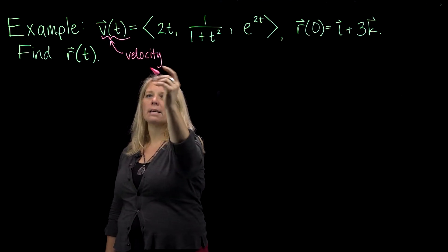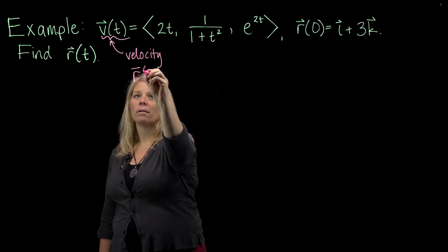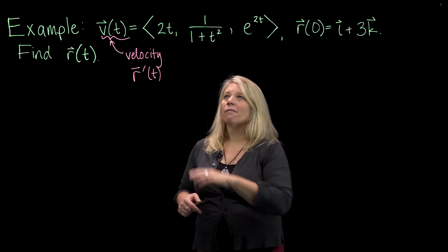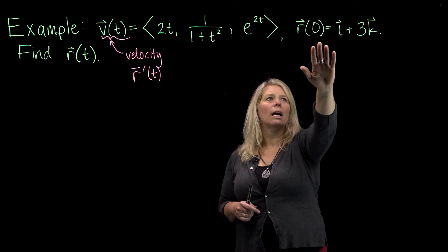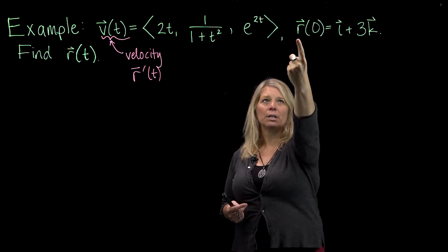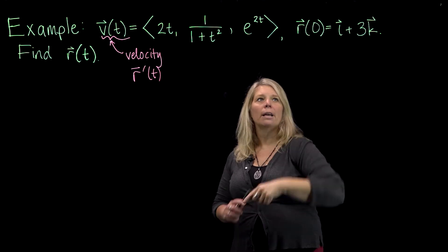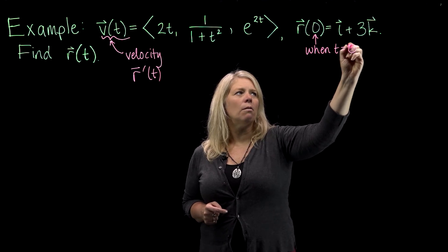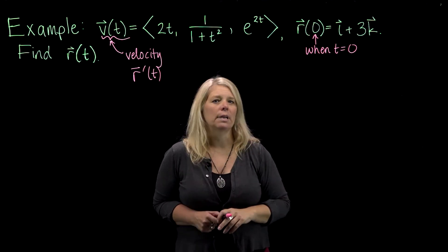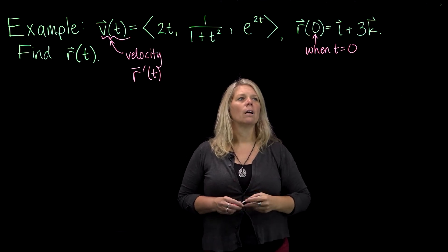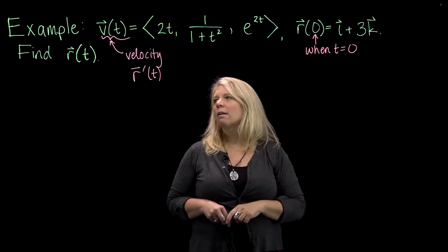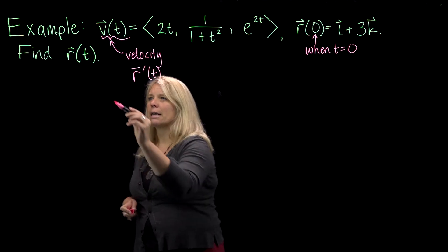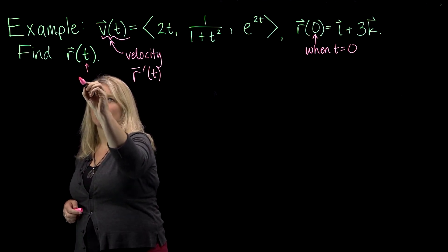We could also say that this is r prime of t, or dr/dt. So we're given a velocity vector, and we're given another vector — a position vector r evaluated at a specific t value, when t equals 0. This is just some numbers in our components. When t equals 0, we get this specific vector, and we are supposed to find r of t — the position function as a function of t for all t.